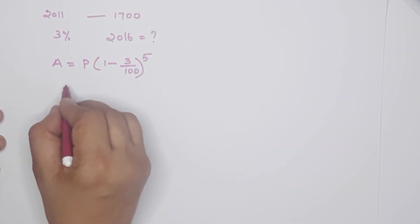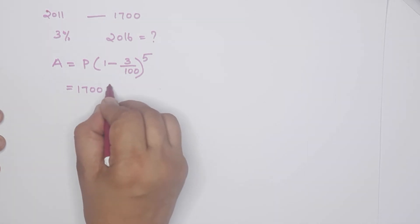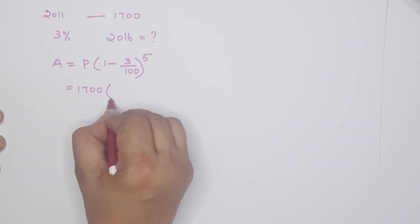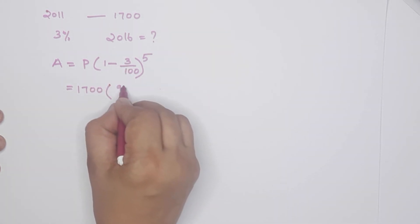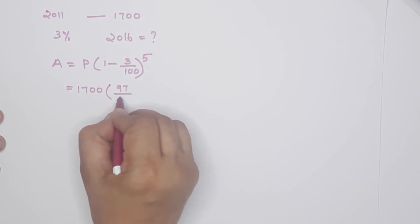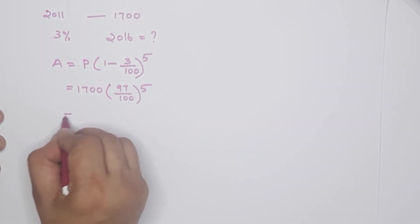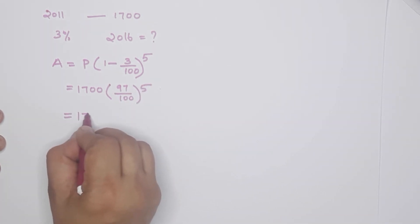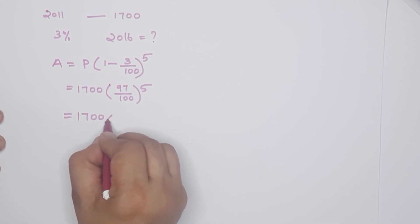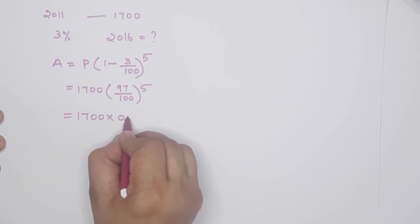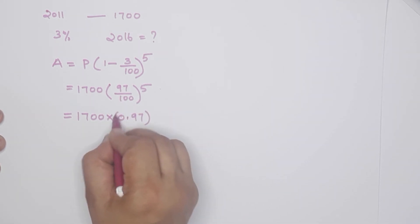So we have 1,700 into 1 minus 3 by 100, whole raise to 5. That is 1,700 into 97 by 100, whole raise to 5, which equals 1,700 into 0.97 raised to 5.